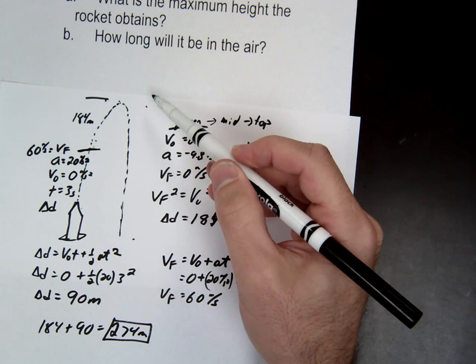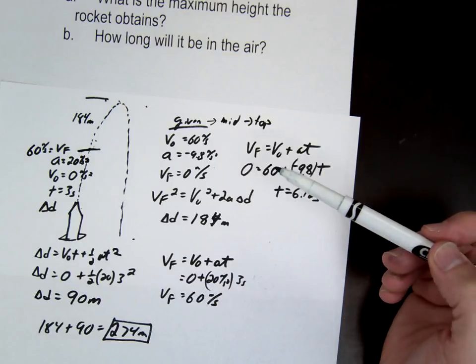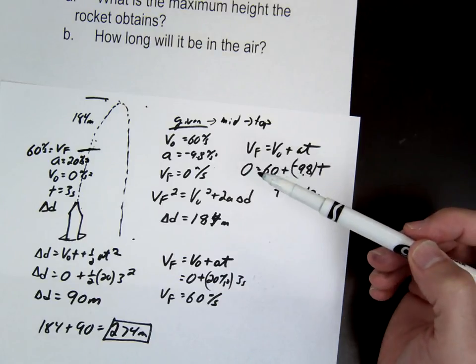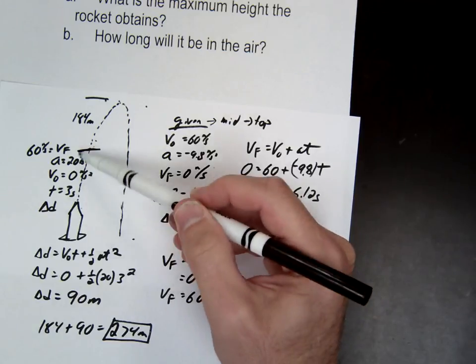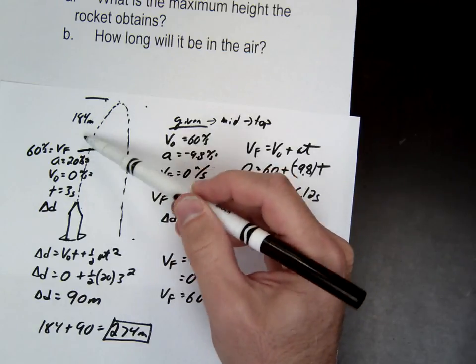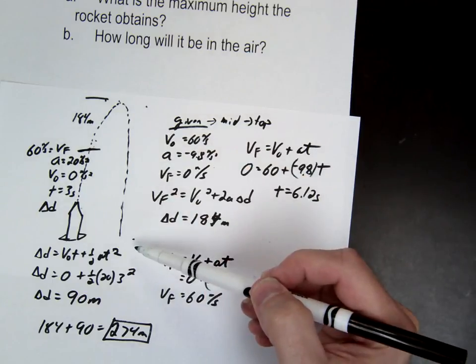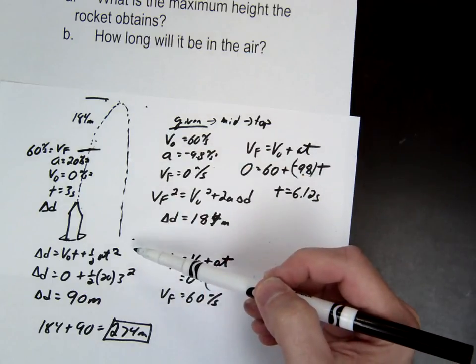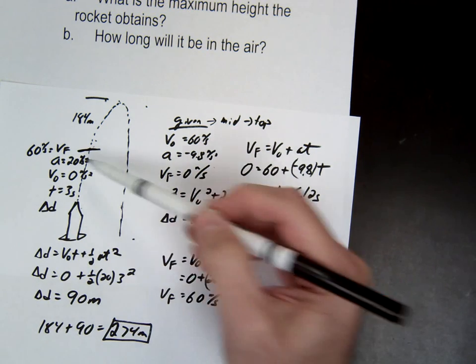Now, can we just say the time to the bottom is also 9.12? No, no. You cannot double it, okay? Because two things are different. This one has an acceleration of 20 and an acceleration of negative 9.8. But on the way down, what's the acceleration? Only one acceleration, negative 9.8. So you can't just say up equals down. They're not symmetrical on these two sides.